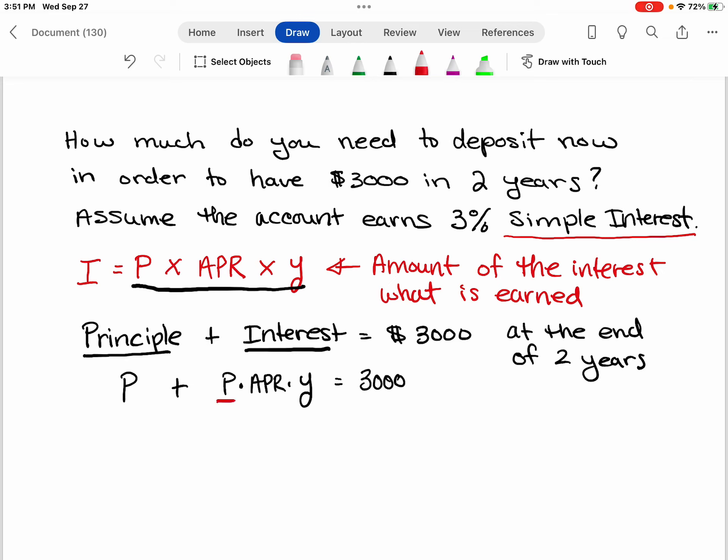We're trying to figure out what the value of P is. We have the value for the APR and the year, so I'm going to go ahead and plug that in. The APR is 3%. The number of years is 2.